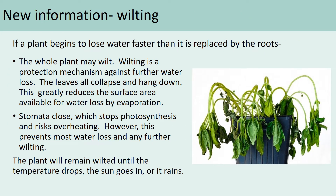Something else that quite a lot of plants do, even in England, is wilting. You might have seen in mid-summer, when you haven't watered your plants, that they will actually wilt — and that is an adaptation. Because the leaves wilt and droop, there's less surface for light to hit, which reduces the light intensity, slows down photosynthesis, and reduces the amount of water loss.